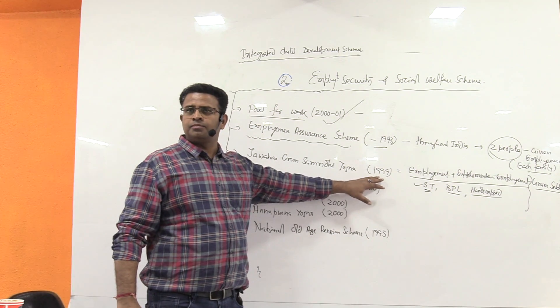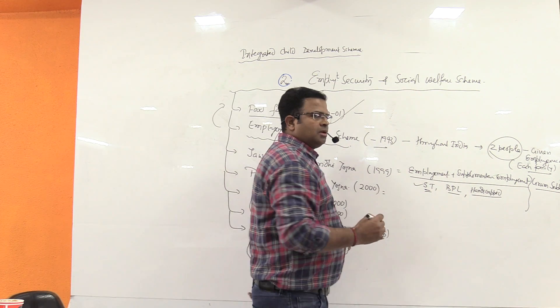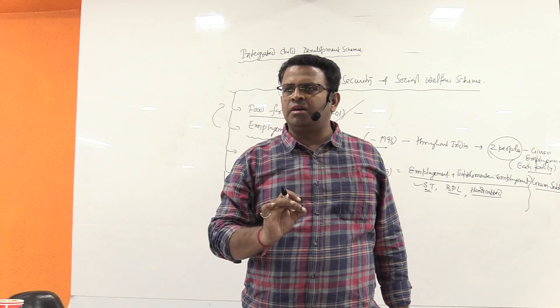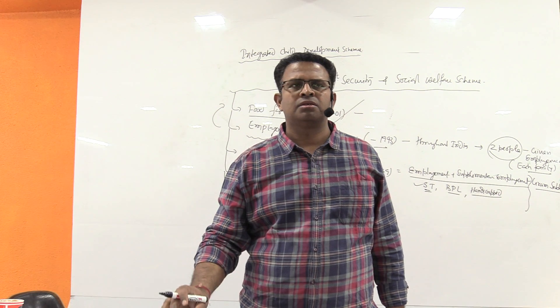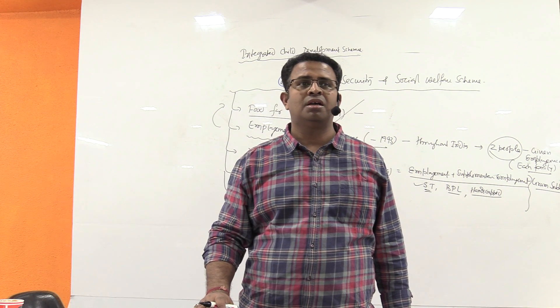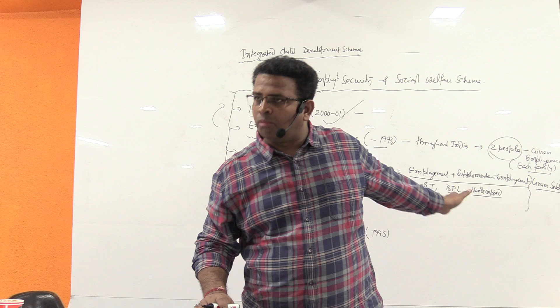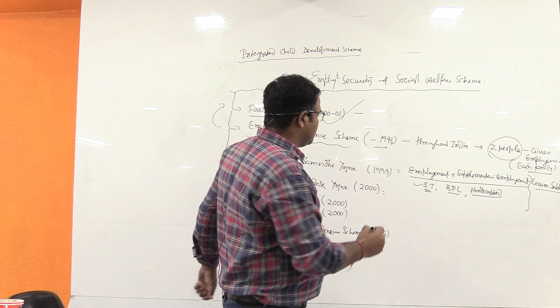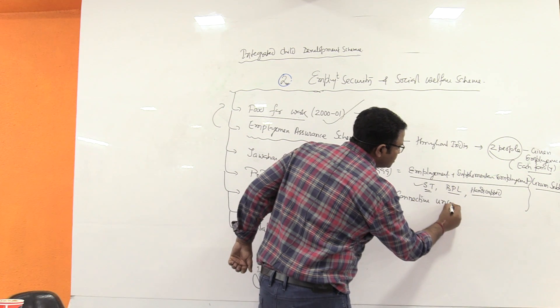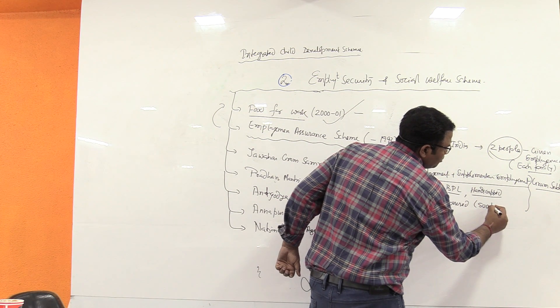This is all clear. Now very easy - Pradhan Mantri Sadak Yojana. Any area where the population is less than 500 should be connected with roads. There are many such areas in India - around 1.5 lakh areas. This will provide large employment. Simply connecting uncovered 500 population areas.